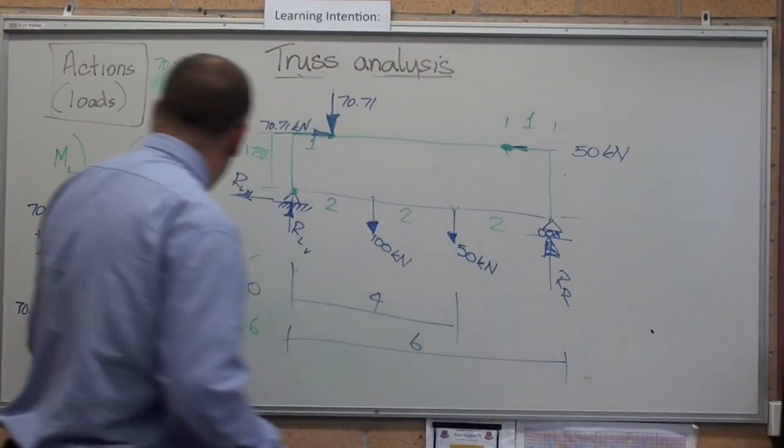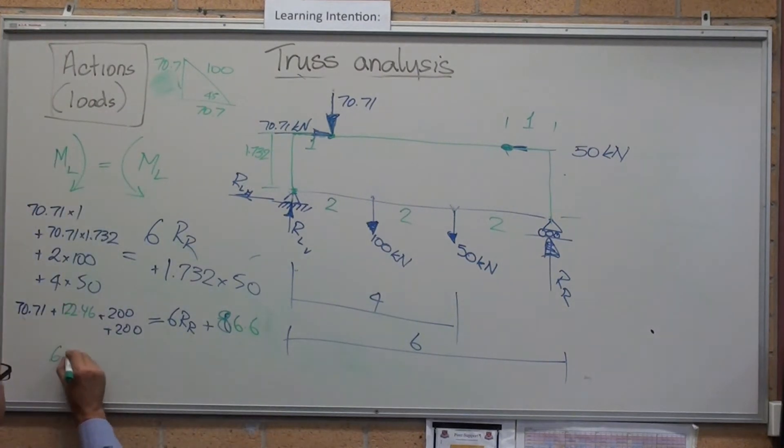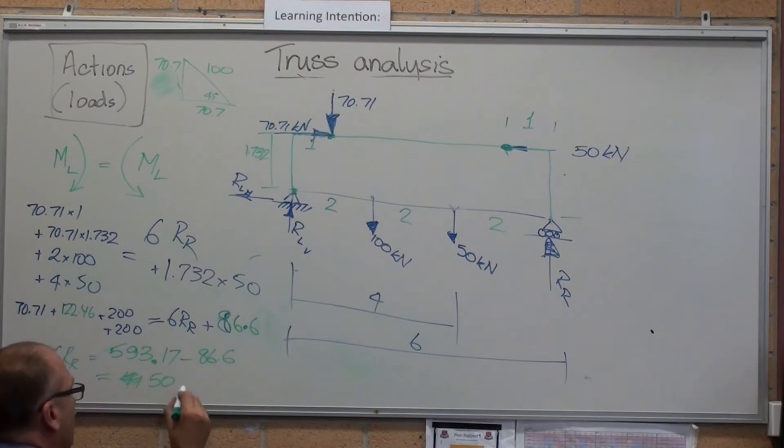70.71 plus something plus 200 plus 200 equals 6 reaction right plus 70.71. So there's your maths. So 6 reaction right equals 200, 400, 500, 592, 593.17 minus 86.6 equals 500 and 6.57.